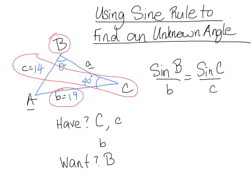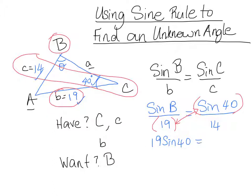So, now we can plug in and see what happens. We have sine of angle B, which is something that we don't know, so let's just call it B, over side b, which is 19, equals sine of angle C, which we have here as 40 degrees, over side c, which we have as 14. Now that we have that, two fractions with an unknown in it, we can cross multiply. So, on the left, we have 19 times sine of 40 will give us 14 times sine B.